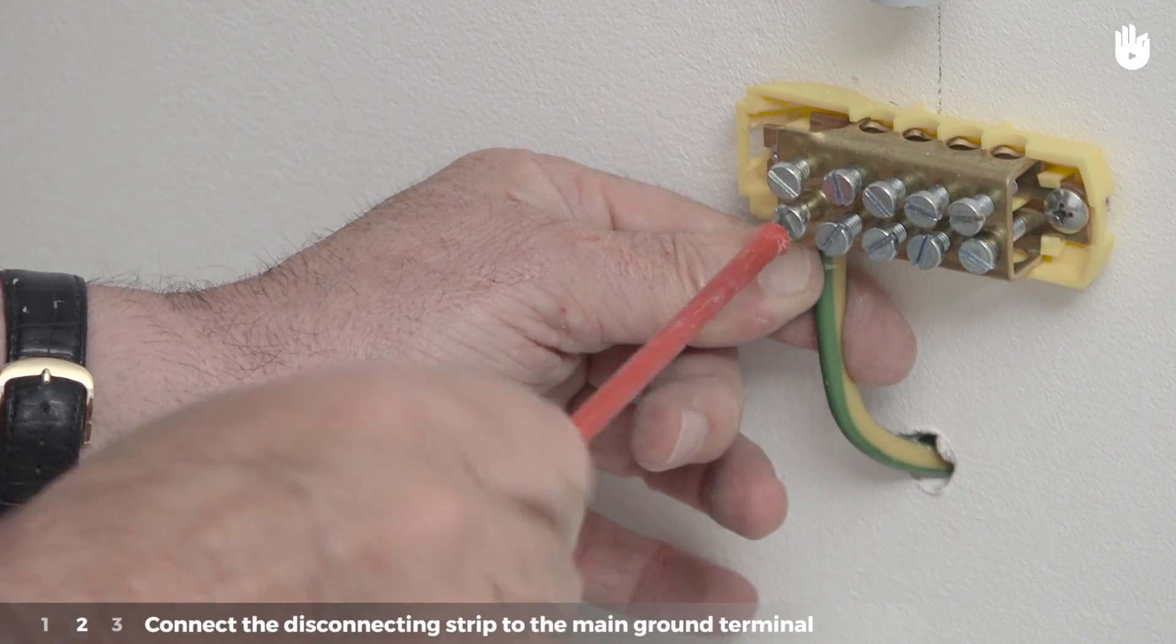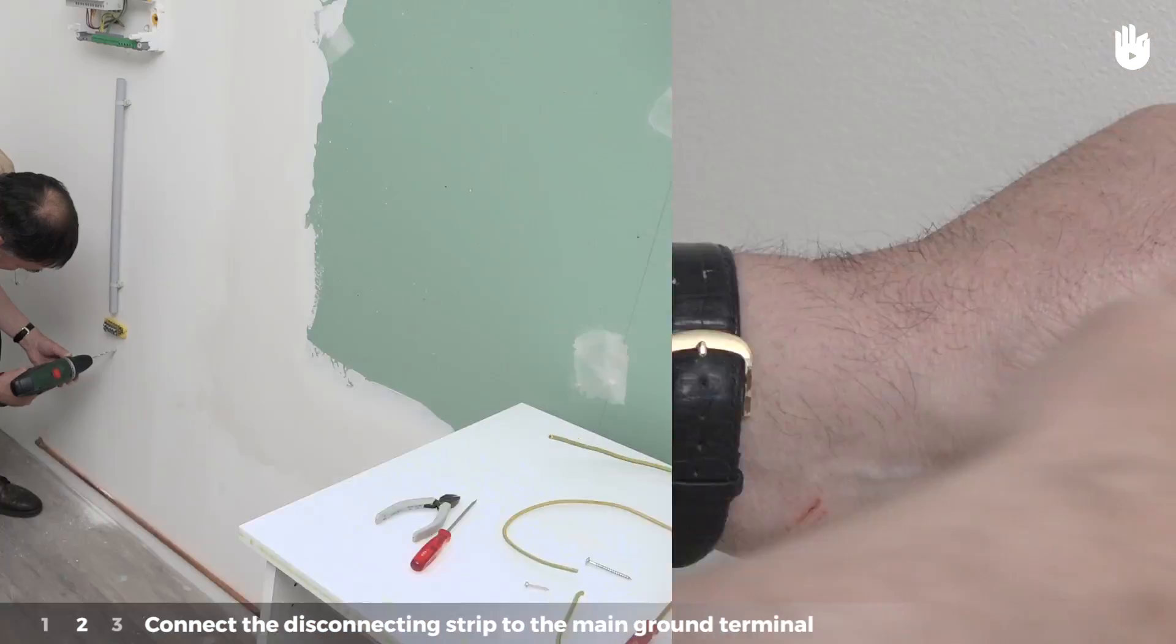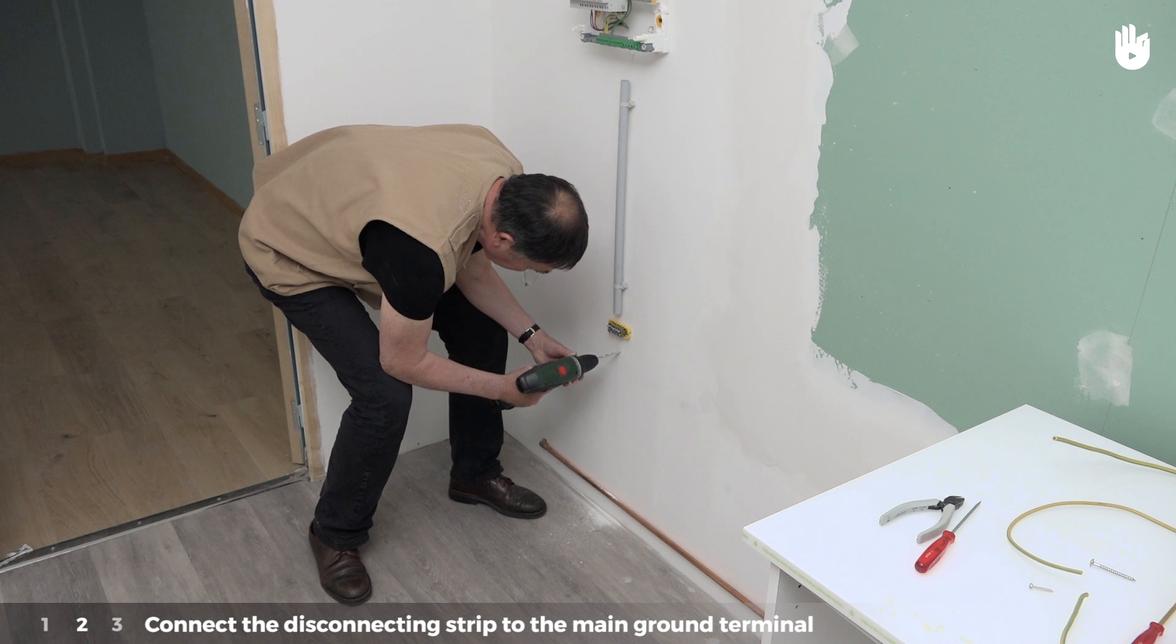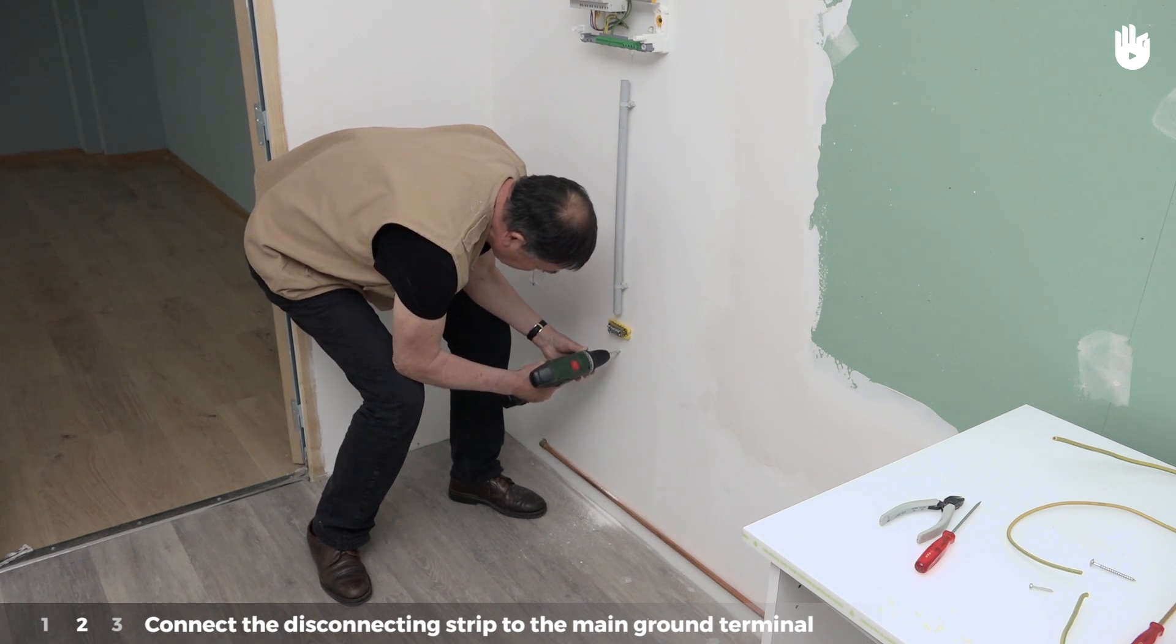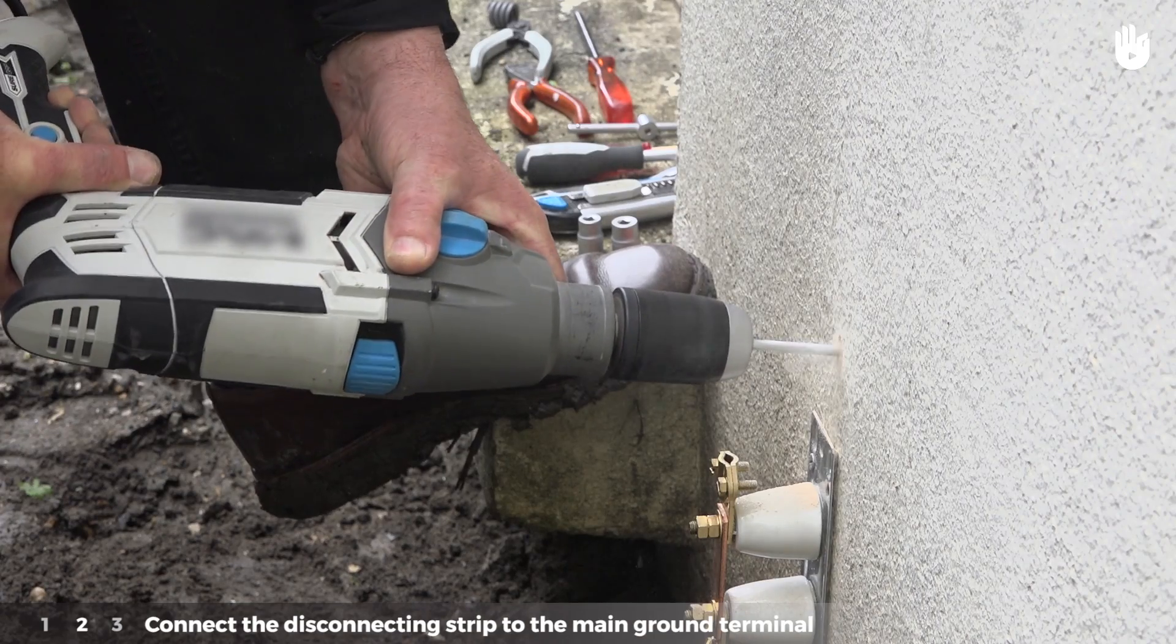Step 2: Connect the disconnecting strip to the main ground terminal. Under the disconnecting strip, drill a hole for the ground conductor to go through. This will enable the ground conductor to connect the disconnecting strip to the exterior, as installed in Step 1.